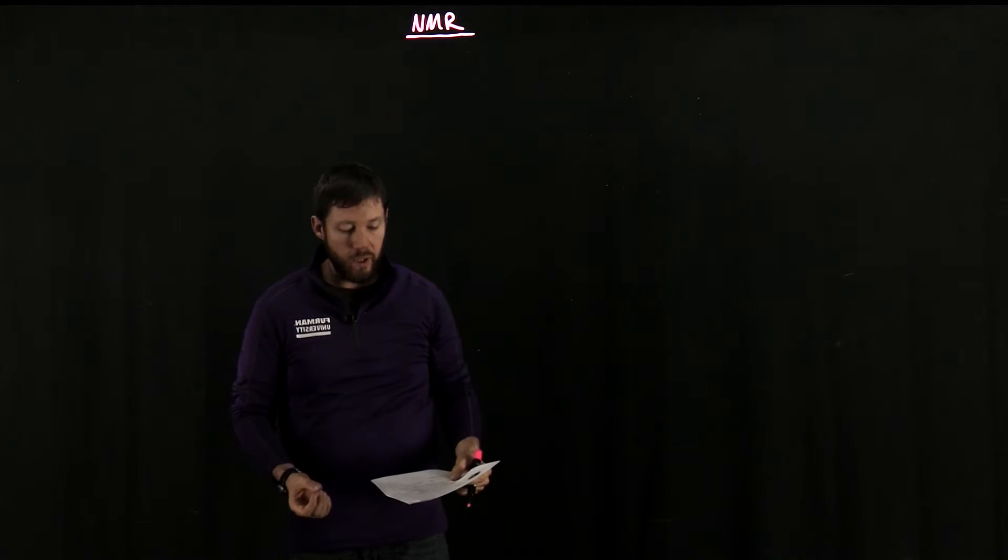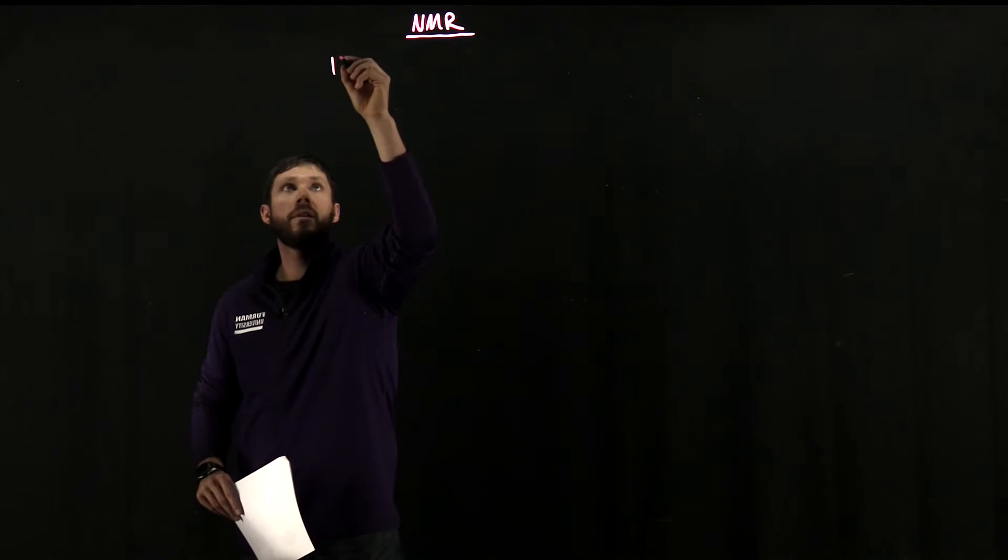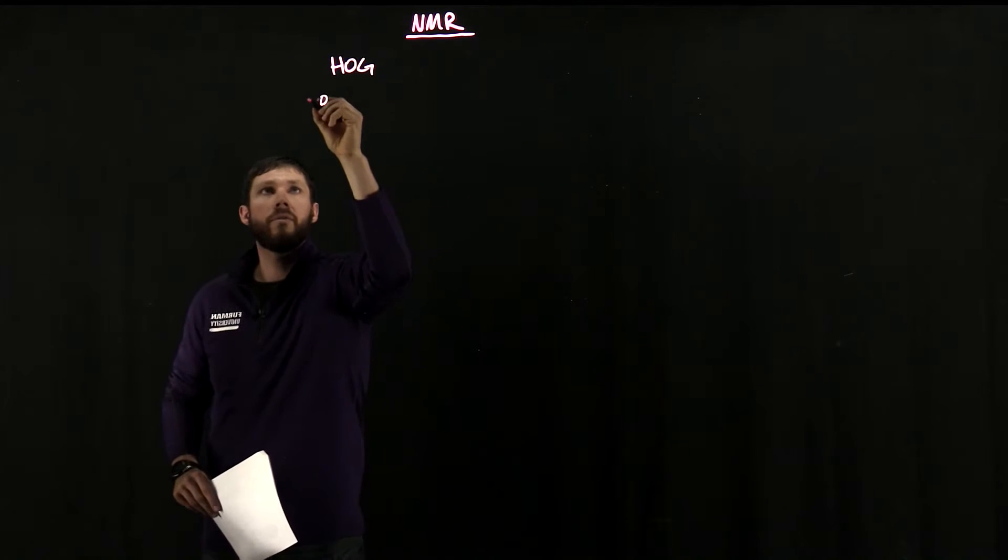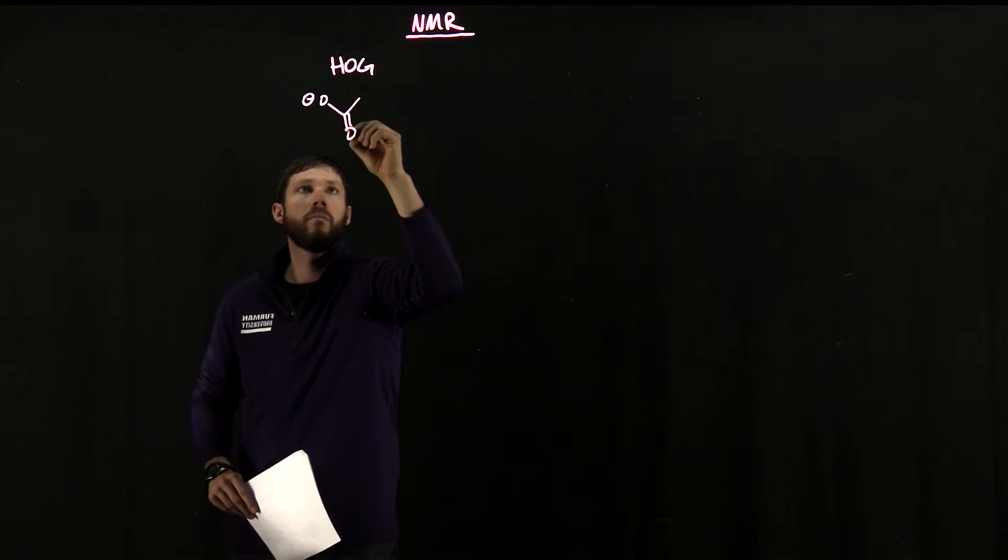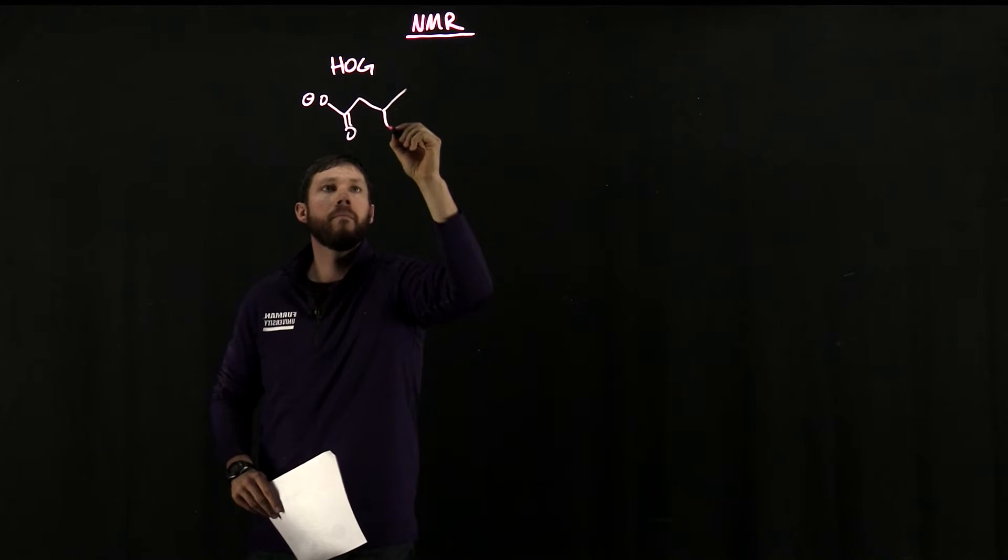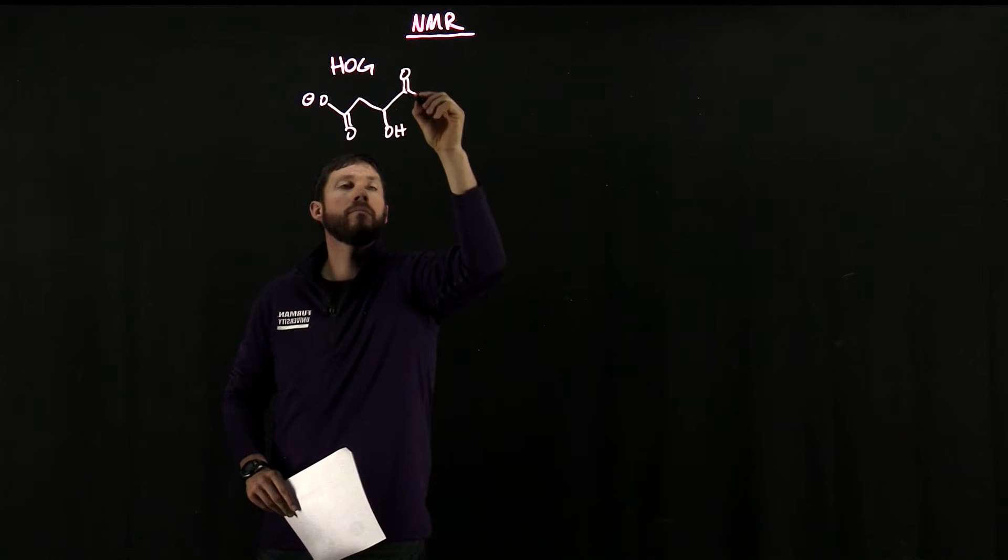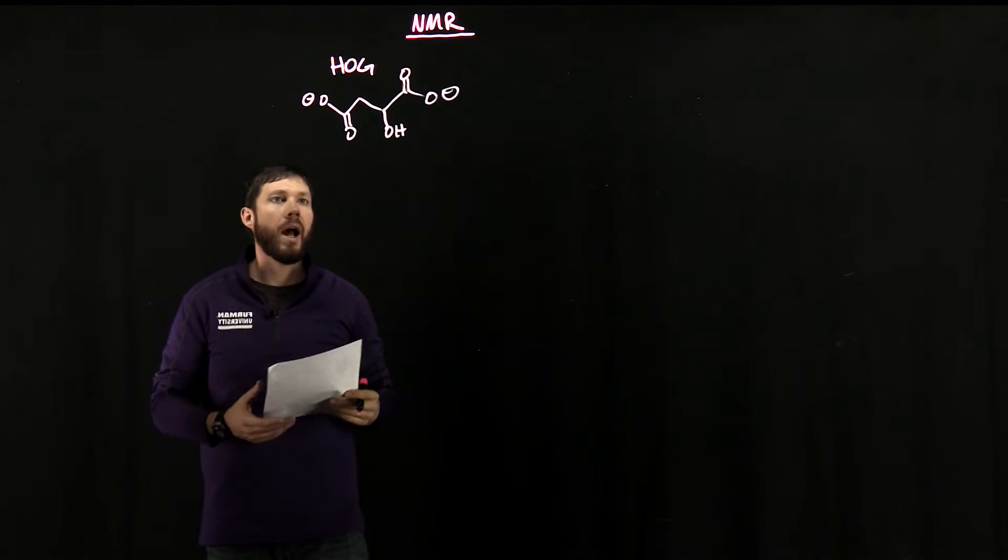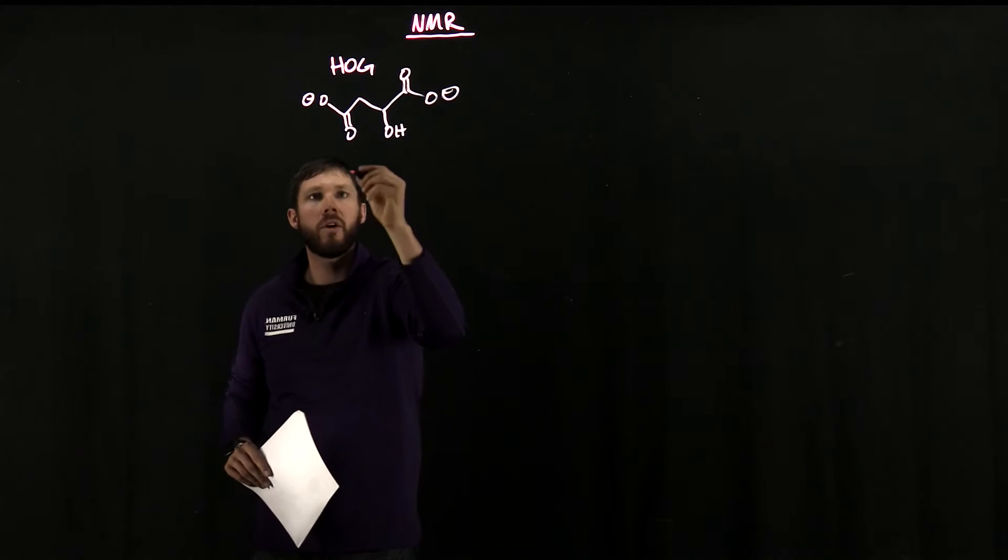The final product was 4-hydroxy-2-oxyglutarate, or as we called it HOG, and has the following structure. And the main question I want to pose to you is how many signals or how many peaks should we expect in the NMR spectrum?